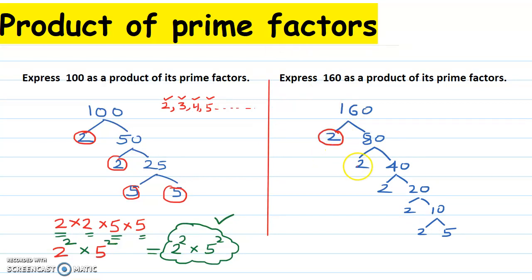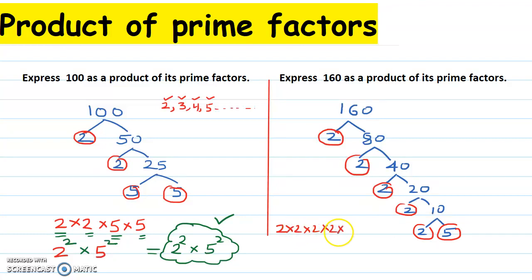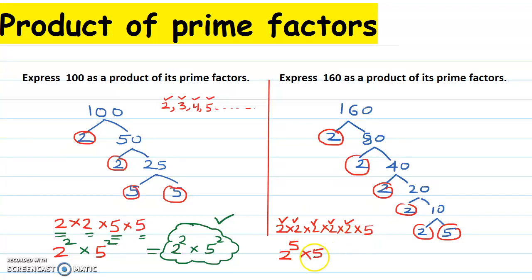These are our prime factors. Counting the twos: one, two, three, four, five — there are five twos and one five. So in index form: two to the power five, and five to the power one. We don't write the power of one, it's understood. So the answer is two to the power five times five.